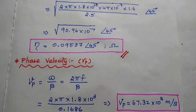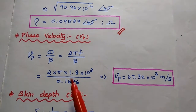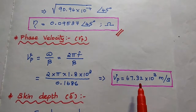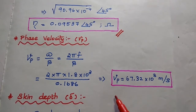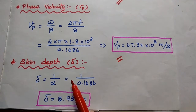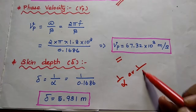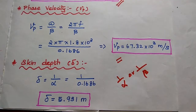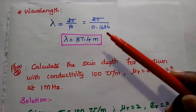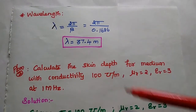Next, the phase velocity vp equals omega by beta equals 2 pi f divided by beta. Substituting beta equal to 0.1686, we get vp equal to 67.32 into 10 to the power 3 meters per second. The skin depth delta equals 1 by alpha equals 1 by 0.1686, giving delta equal to 5.931 meters. Finally, the wavelength lambda equals 2 pi by beta, substituting beta equal to 0.1686, giving lambda equal to 37.4 meters.